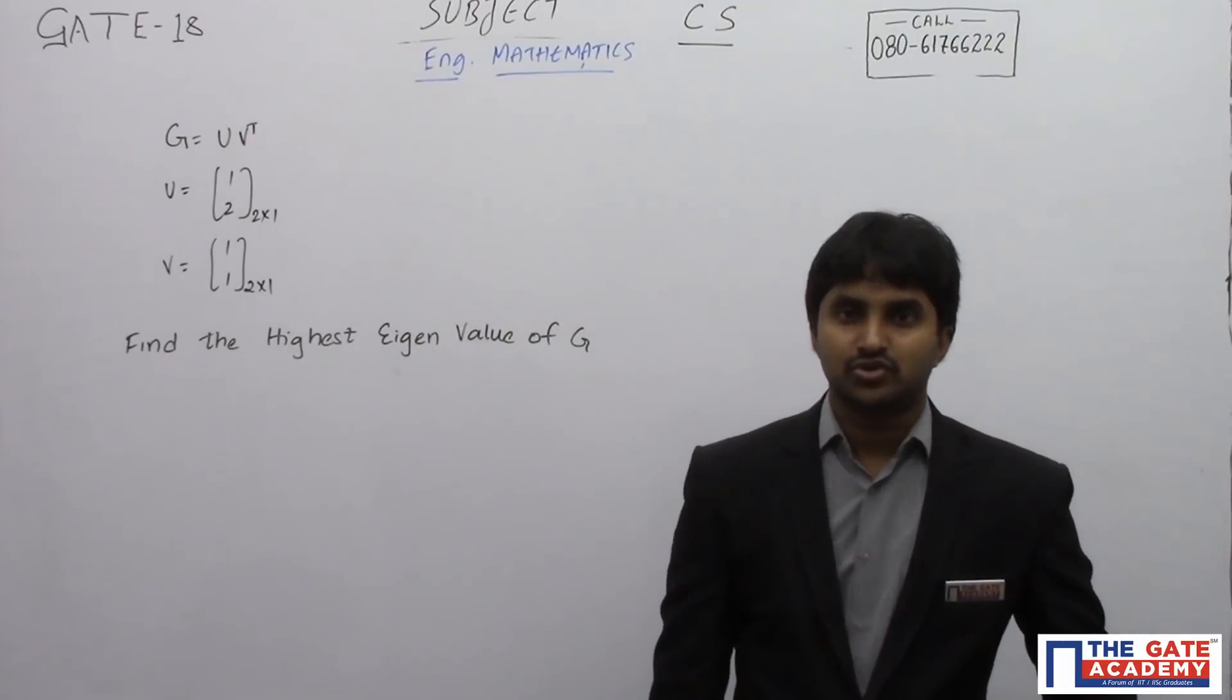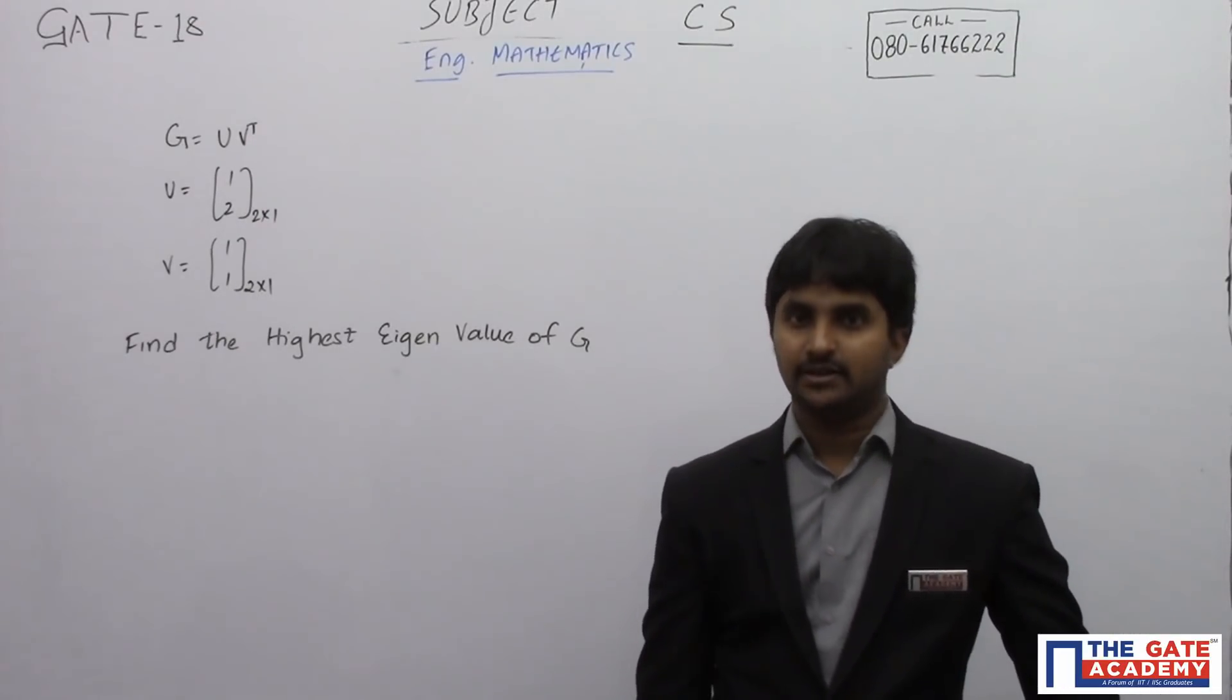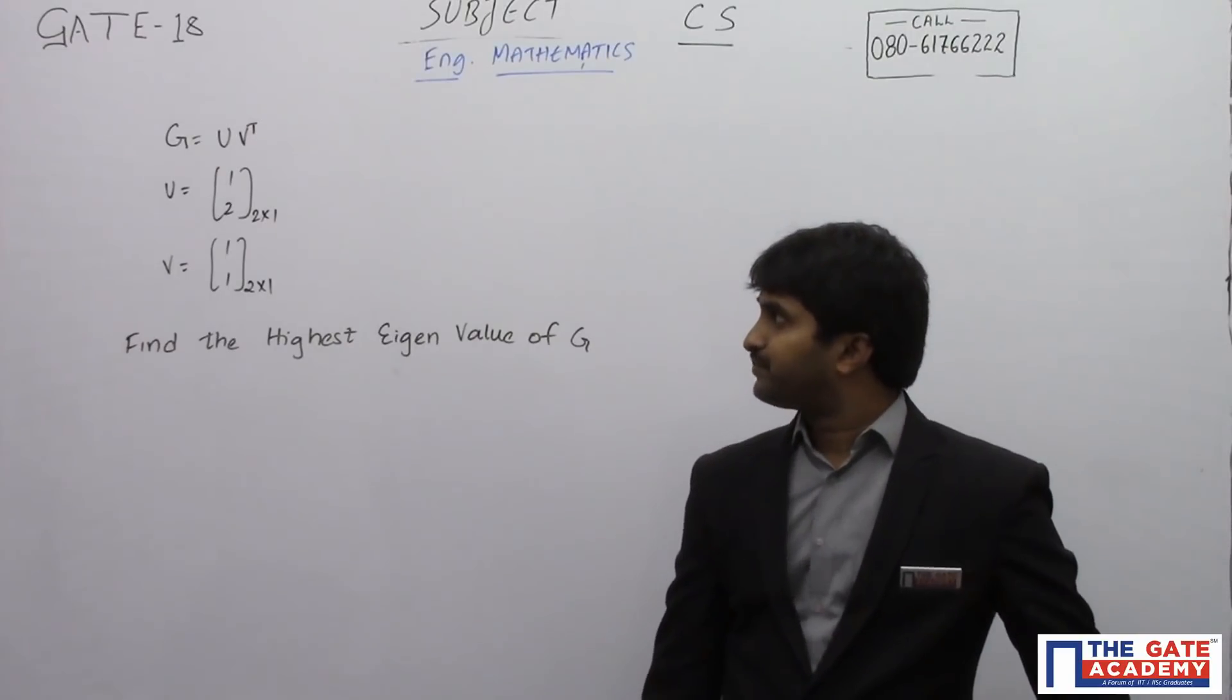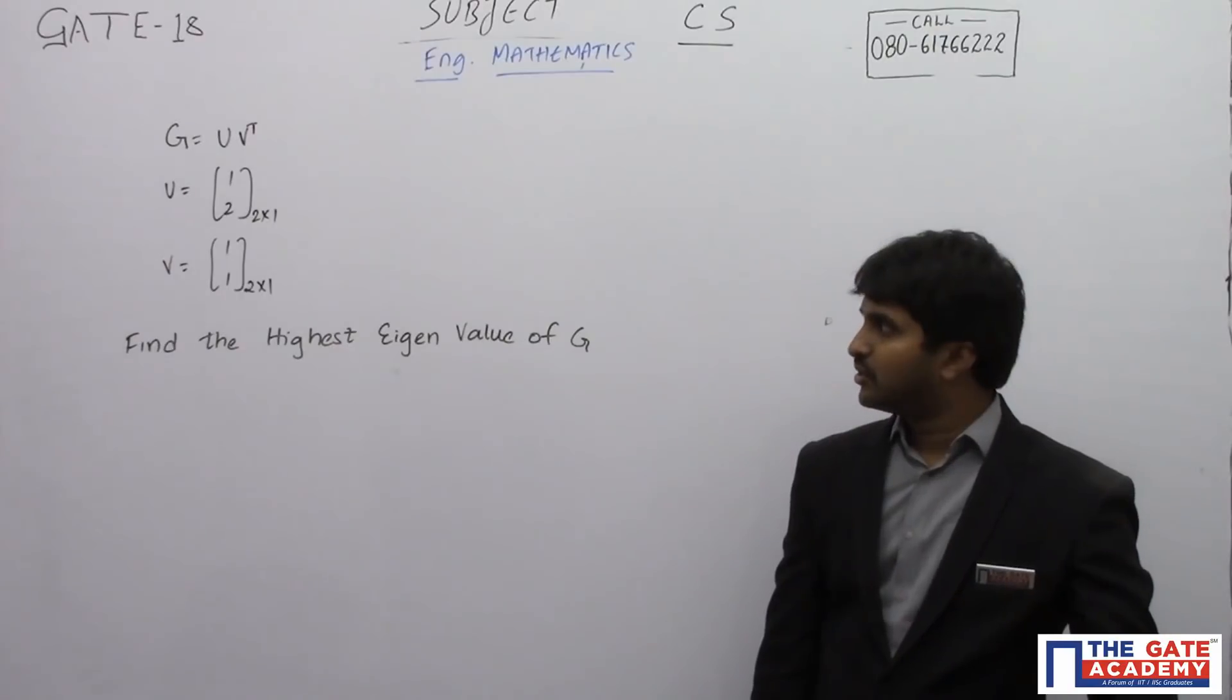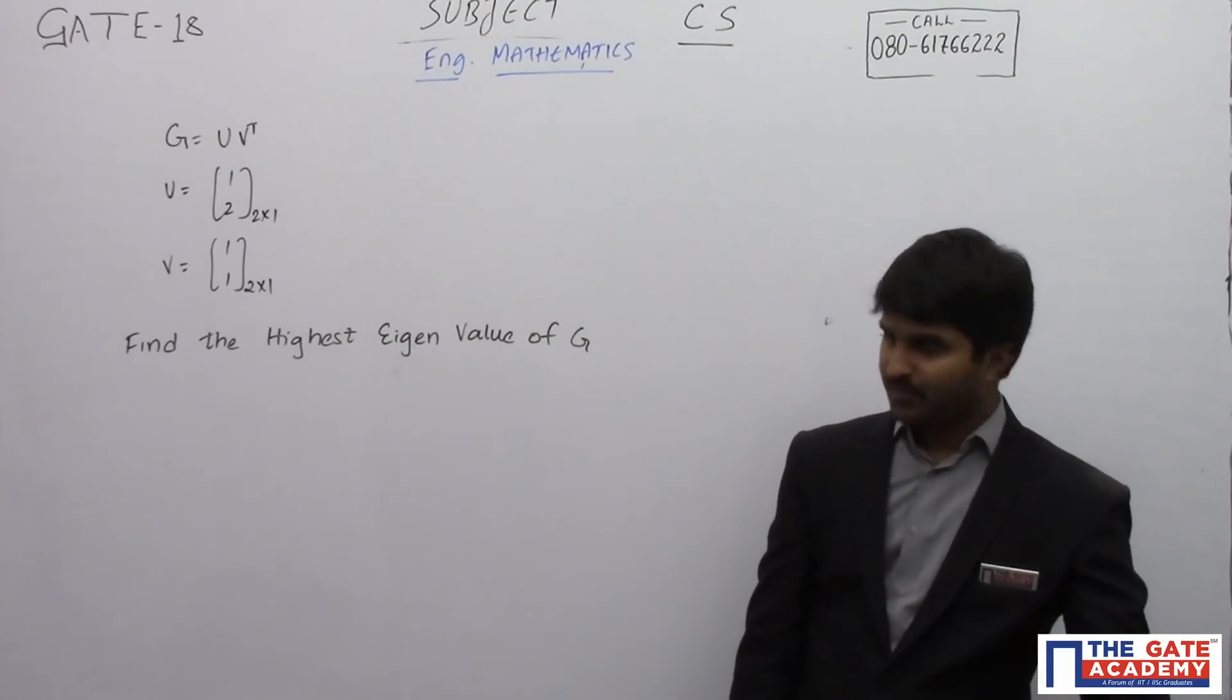Hello students, this question is from Computer Science GATE 2018. First of all, let us see the question. Here the matrix G is given as u into v transpose. u is equal to [1, 2] 2 by 1 matrix, v is [1, 1] 2 by 1 matrix. Find the highest eigenvalue of G.